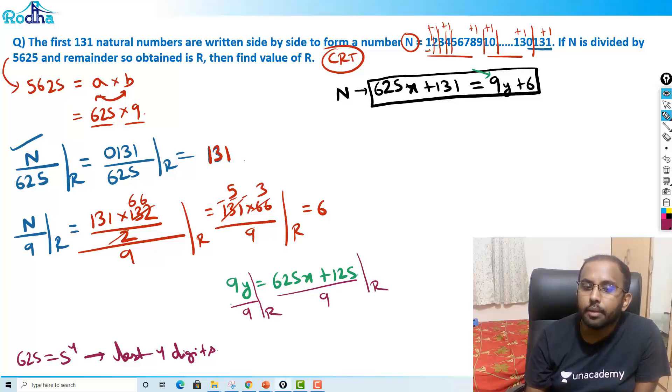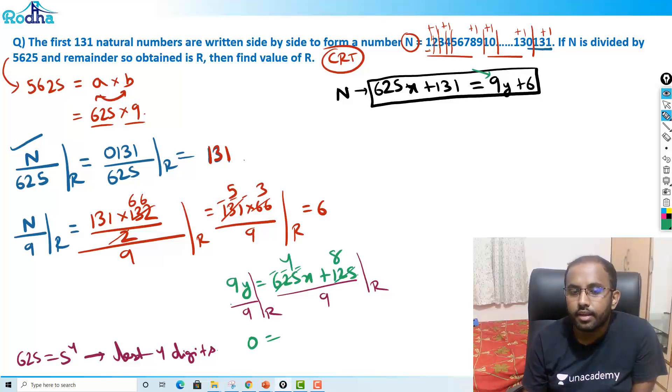Like 9y = 625x + 125. I can write like this. Now divide both sides by 9 and take the remainder. I explained you in those videos. 9y by 9, what is the remainder here? And what is the remainder here? So 9y by 9 remainder becomes 0 actually. This becomes 0. 625 by 9: 6+2+5 = 13, 13 by 9 remainder is 4. This becomes 4 and this becomes 8. It is like 4x + 8 by 9. It is like 4x + 8 by 9 remainder is 0.